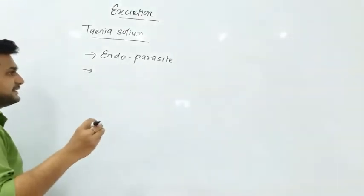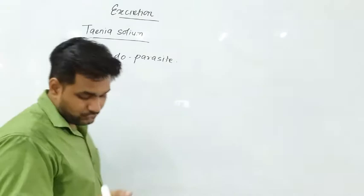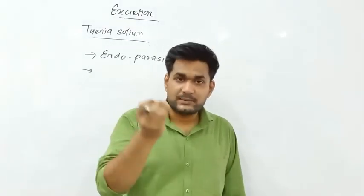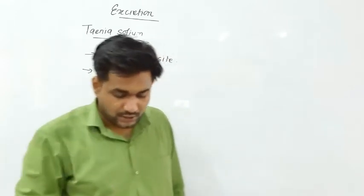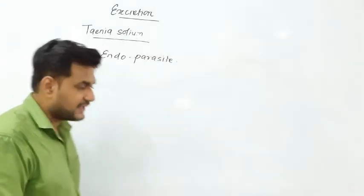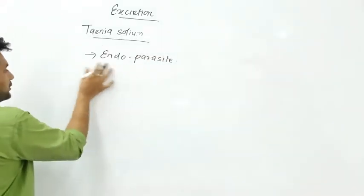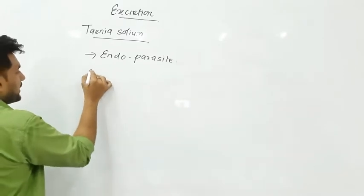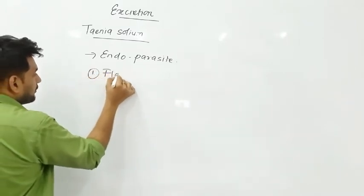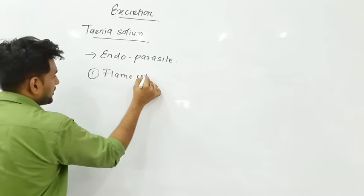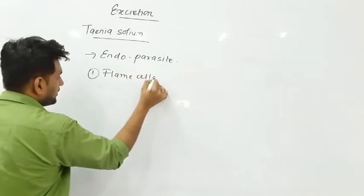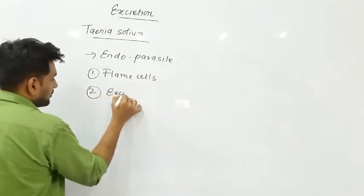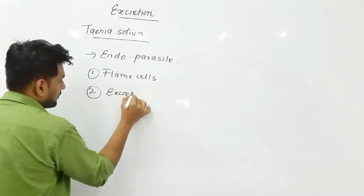The excretion system is divided into two parts. The first part is flame cells — these are the main excretory organ. And the second part is the excretory canal. So the excretory system of Taenia solium is divided into two parts: first, flame cells, and second, excretory canals.